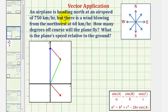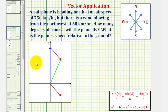To begin, because the airplane is heading due north at an airspeed of 750 kilometers per hour, we can represent this using this blue vector. So if we call this blue vector vector p, notice how it's pointing due north, and because the airspeed is 750 kilometers per hour, the magnitude of vector p is equal to 750.